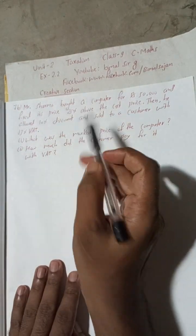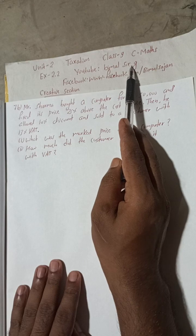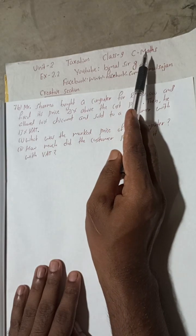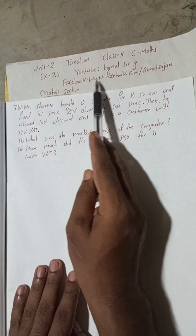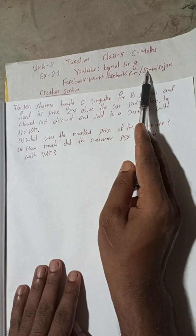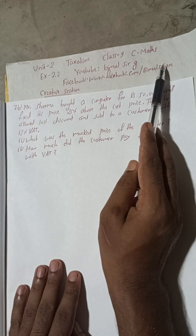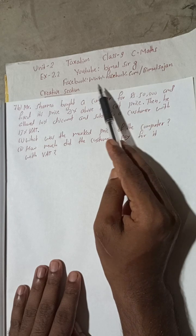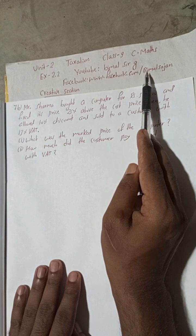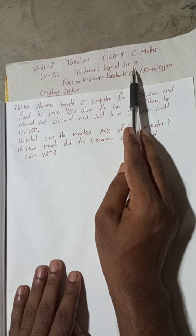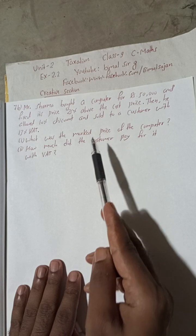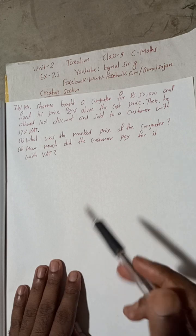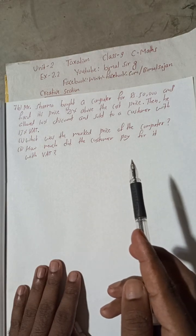Hi class 9 and 10 students, welcome back to Bimal Sarji's YouTube channel. This is question number 7b of exercise 2.2, unit 2 taxation, class 9 compulsory maths. If you type www.facebook.com you will get my Facebook ID. Follow me on that Facebook page so you won't miss any updates of newly uploaded videos. Subscribe this channel if you haven't — here you will get all the solutions of class 9 and 10 compulsory as well as optional mathematics, and also Asmita publication question bank solutions.